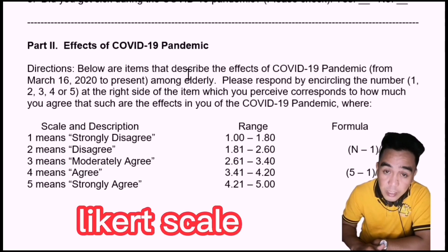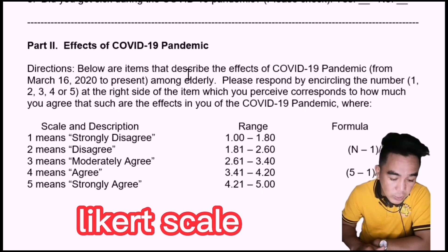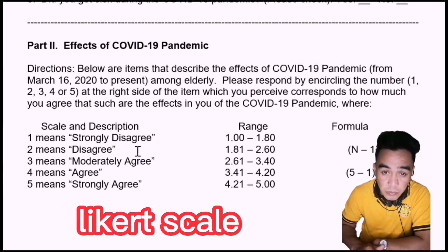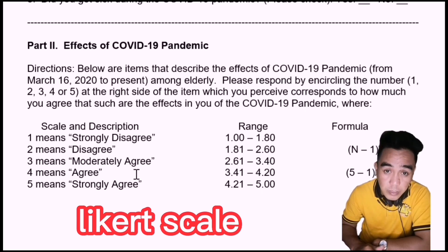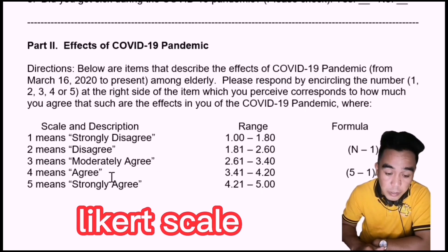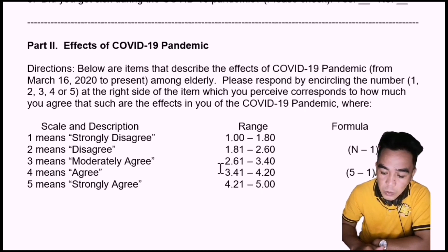In this study, the researchers used a 5-point scale, where 1 means strongly disagree, 2 means disagree, 3 means moderately agree, 4 means agree, and 5 means strongly agree.